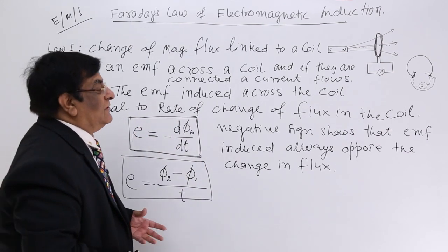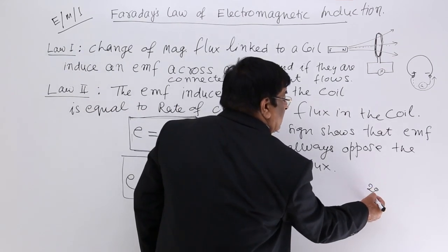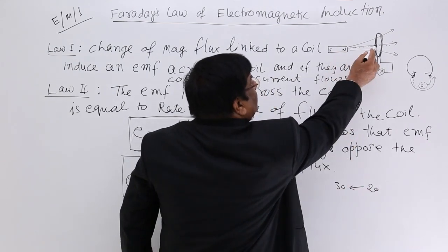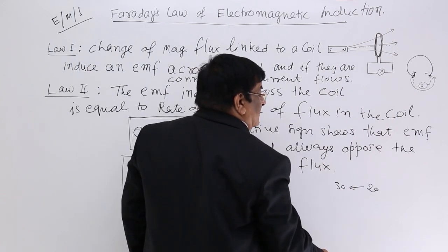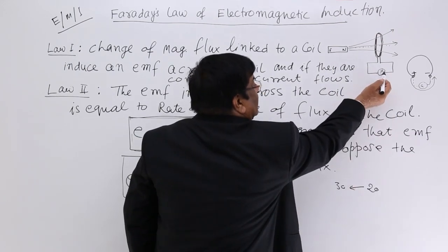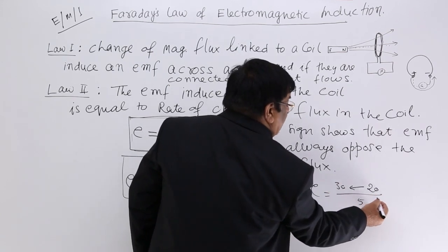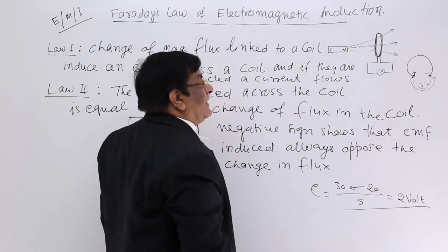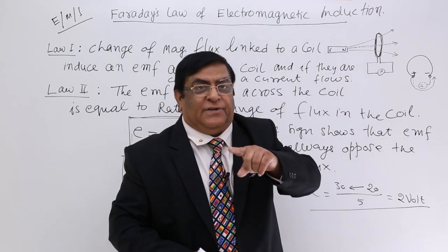Suppose I tell you there was a flux linked with a coil which was 20. Within 5 seconds it has become 30. Then what is the EMF induced here? EMF induced equals change in flux divided by time: 2 volt. So, our galvanometer will show 2 volt. What is the unit of EMF? Volt.